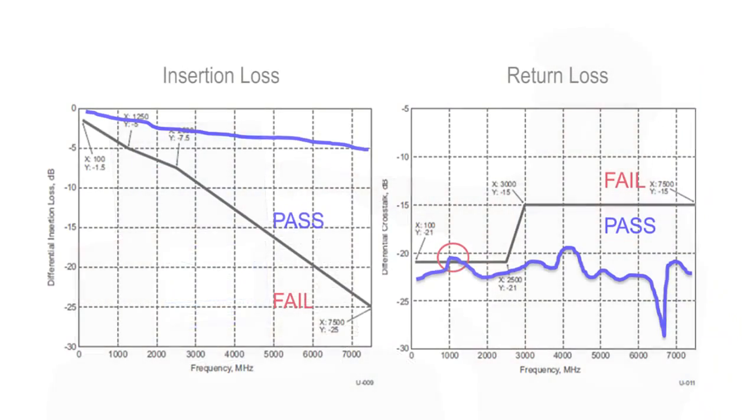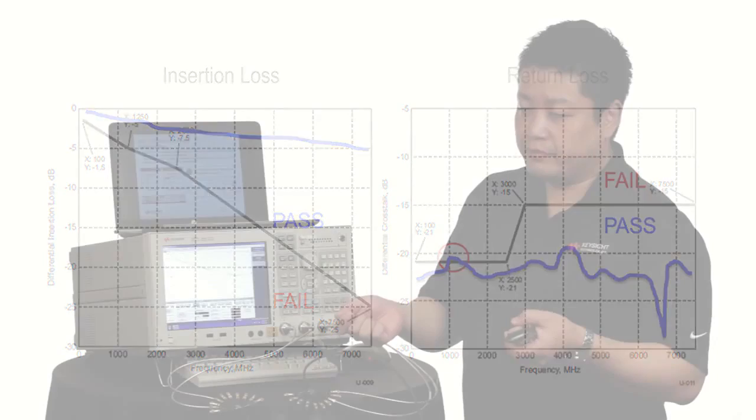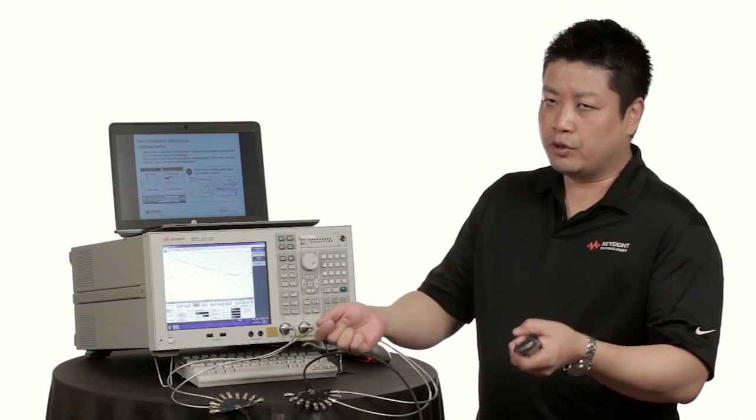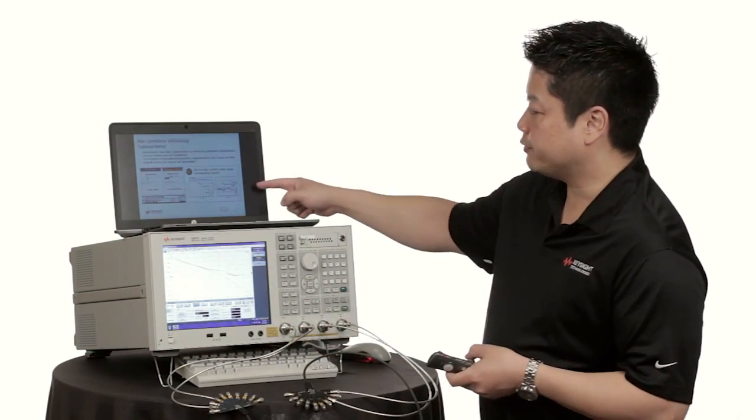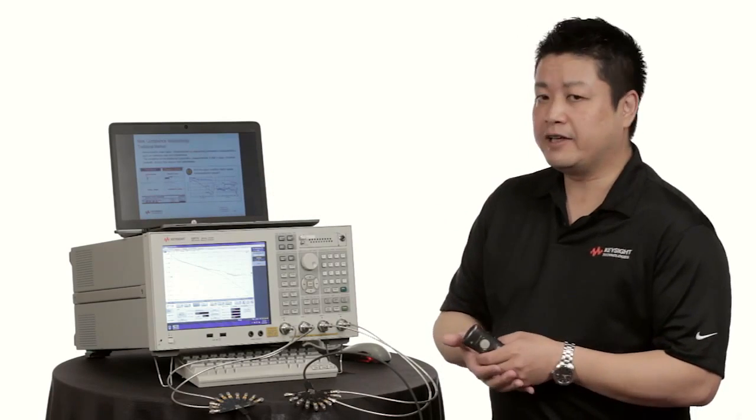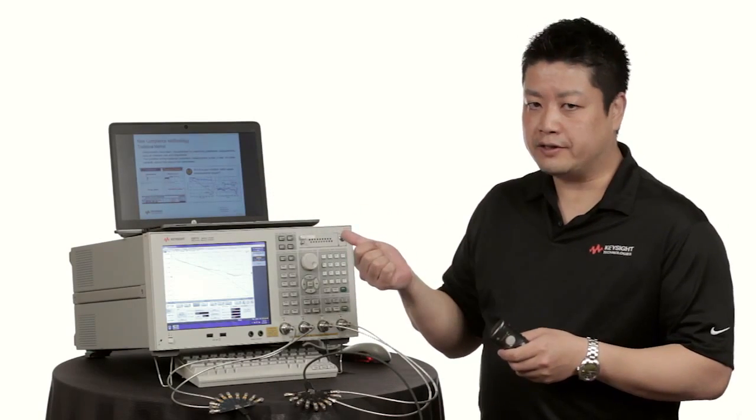Let's say for example you had sufficient margin in the insertion loss and you were failing several points on the return loss trace. When you connected this cable to the system it could very well be that the cable would work without any issues, but according to the specification this is a bad cable because it failed that return loss test.